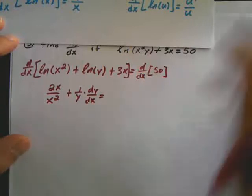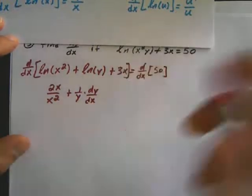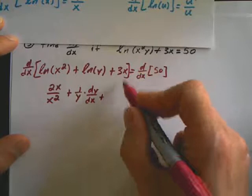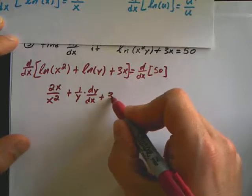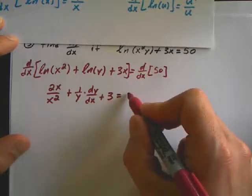The derivative of 3x is just going to be a 3. And this constant, this derivative is going to be equal to 0.